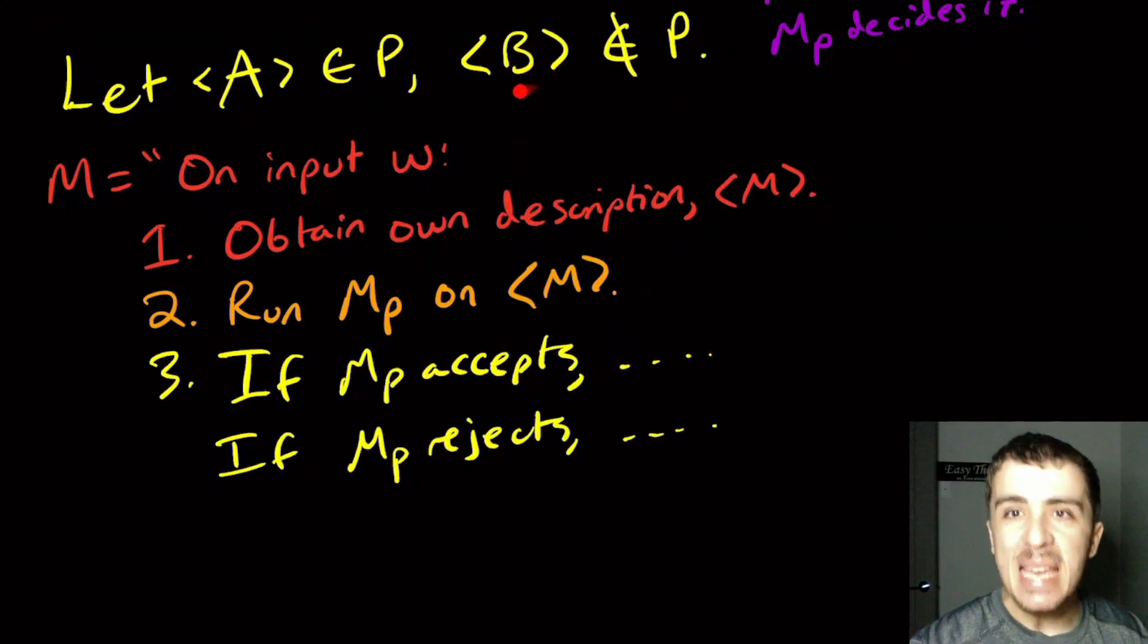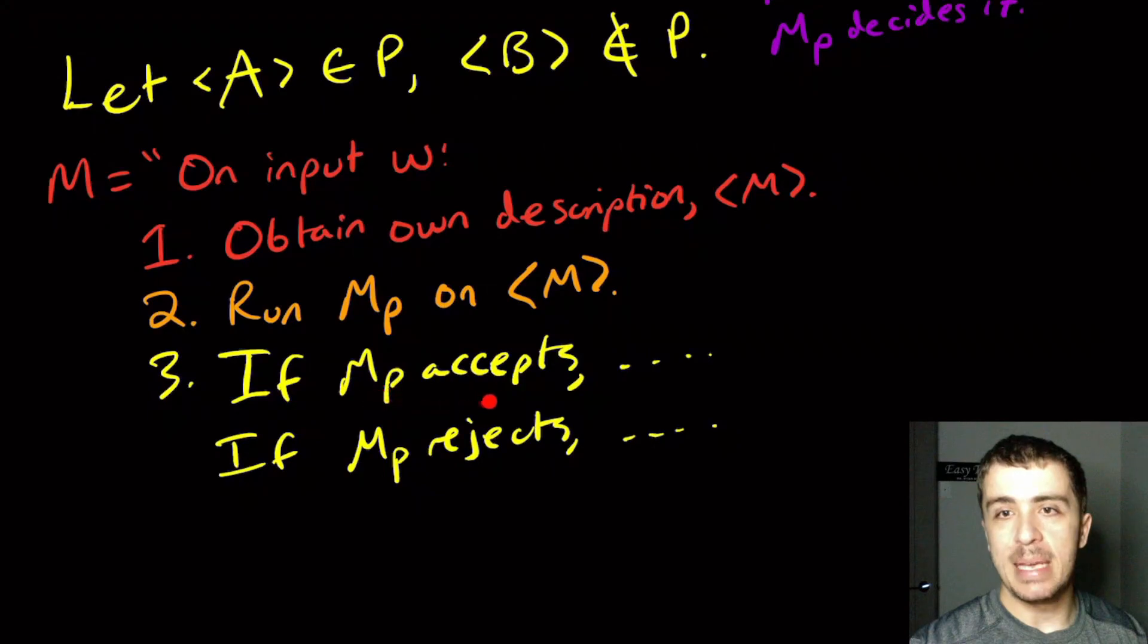If we simulated at this point the machine B, which does not have the property P, then that will get us a contradiction, because if MP accepts that implies M has the property.